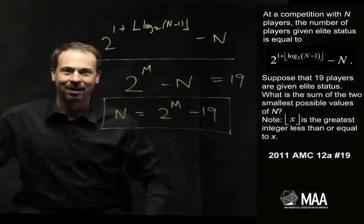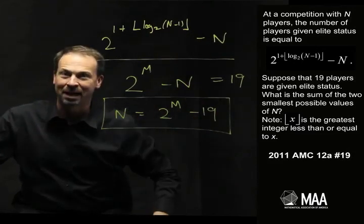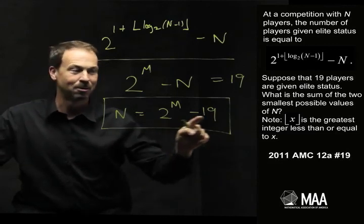Well actually, I'm going to ignore this completely for the moment because I can see what N could be. It's just a power of 2 minus 19.